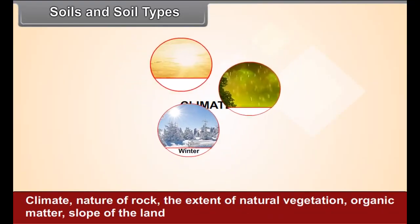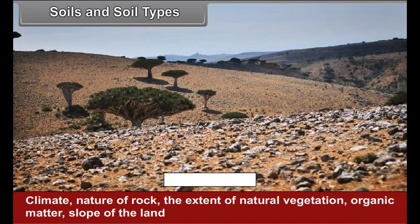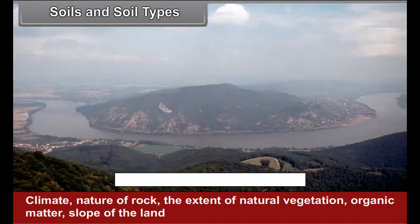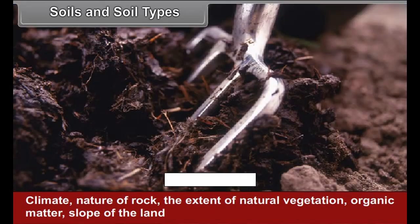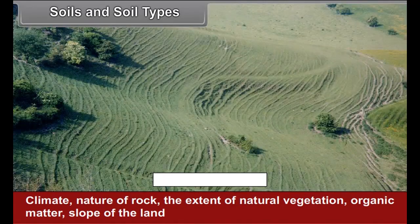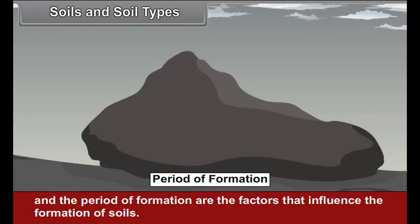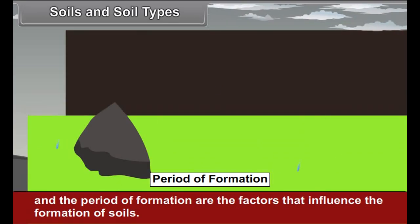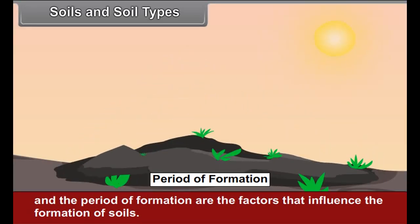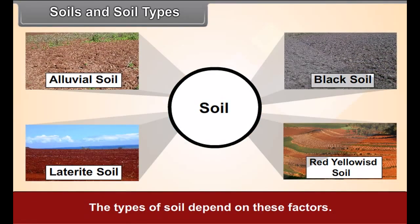Climate, nature of rock, the extent of natural vegetation, organic matter, slope of the land, and period of formation are the factors that influence the formation of soils. The type of soil depends on these factors.